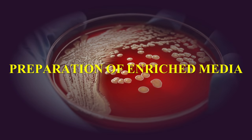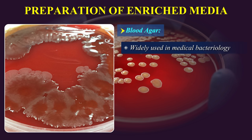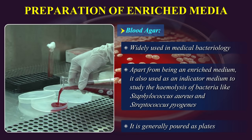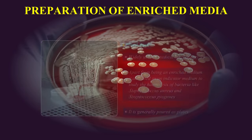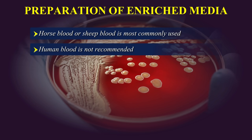Preparation of enriched media — Blood agar. Blood agar is widely used in medical bacteriology. Apart from being an enriched medium, it is also used as an indicator medium to study the hemolysis of bacteria like Staphylococcus aureus and Streptococcus pyogenes. It is generally poured as plates. Horse blood or sheep blood is most commonly used. Human blood is not recommended.